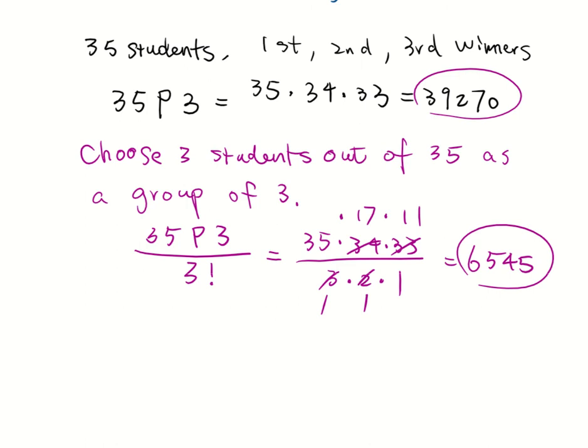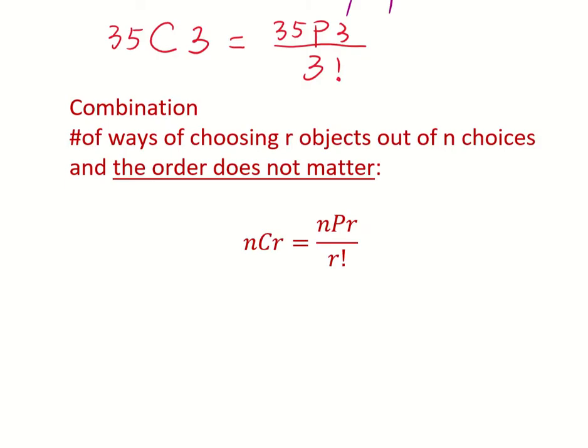Actually, to pick 3 out of 35 and put them in a group where the order does not matter is actually a combination. It is a combination of choosing 3 out of 35. And as we did the calculation earlier, it is equal to actually the permutation of choosing 3 out of 35 divided by 3 factorial.